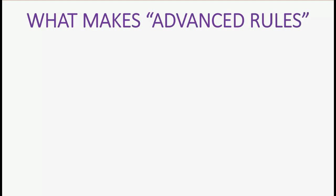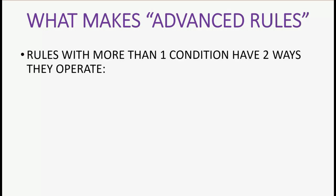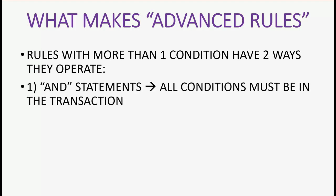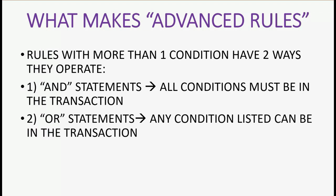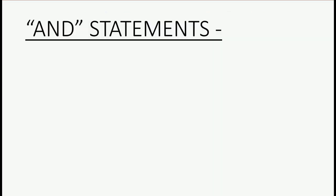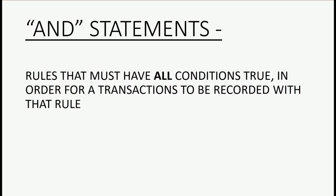What would be considered an advanced rule? An advanced rule is a rule with more than one condition and has two ways to operate. You could make an advanced rule with one additional condition by using an AND statement, which means all conditions in the rule must be true in order for the transaction to be recorded with that rule. The other way is to use an OR statement, meaning any one condition must be true.